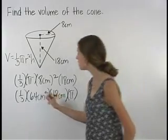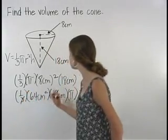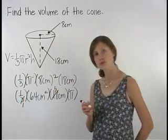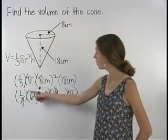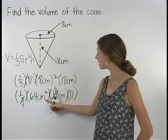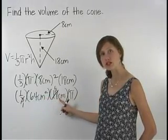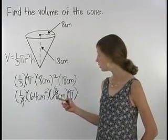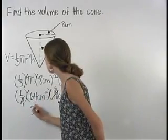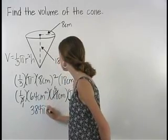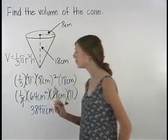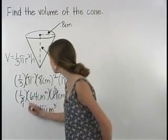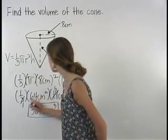Next, notice that 3 and 18 cross cancel to 1 and 6. Now multiplying, 1 times 64 cm² times 6 cm equals 384 cm³. So we have 384π cm³. The volume of the cone shown here is 384π centimeters cubed.